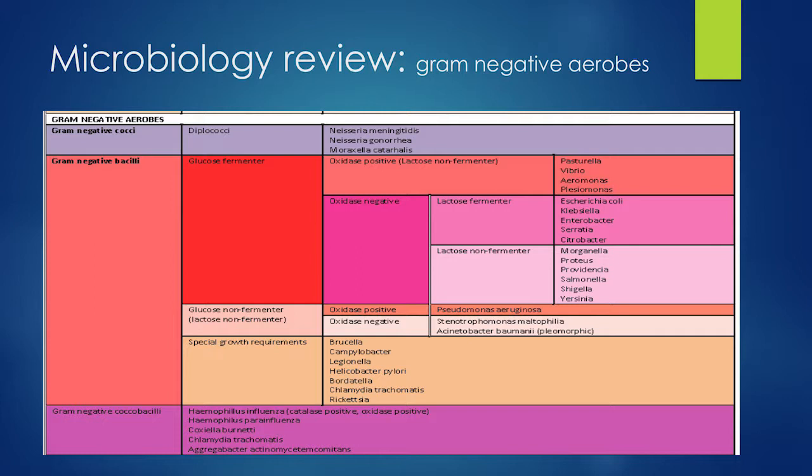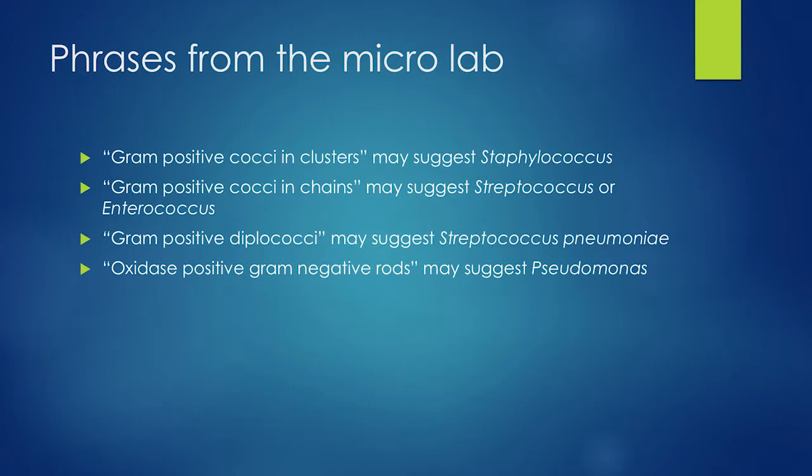Gram negatives can get more confusing — you have glucose fermenters and non-fermenters, and oxidase-positive gram negative rods, a very common one being Pseudomonas. It's not truly important to get into all the details because that's why we have the lab — they give us our sensitivities.